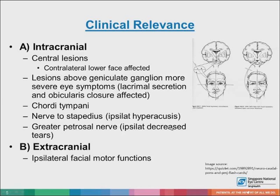Usually the forehead is spared in central palsy. Lesions above the geniculate ganglion cause more severe eye symptoms because they affect tear production as well as orbicularis closure of the eye. The chorda tympani also reduces salivation and causes loss of taste of the ipsilateral two-thirds of the tongue. The nerve to the stapedius results in ipsilateral hyperacusis, meaning they are very hypersensitive to sound. The greater petrosal nerve reduces ipsilateral tear production.